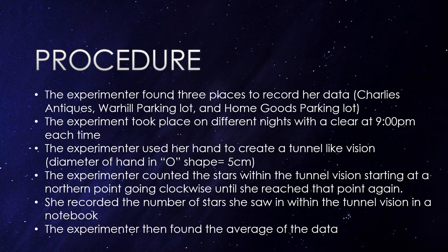The procedure. The experimenter found three places to record her data: Charlie's Antiques, Warhill parking lot, and Home Goods parking lot. The experiment took place on different nights with a clear sky at 9 p.m. each time. The experimenter used her hand to create a tunnel-like vision, and the diameter of her hand in the O shape is 5 centimeters. She counted the stars within the tunnel vision starting at a northern point, going clockwise until she reached that point again, and recorded the number of stars in a notebook. The experimenter then found the average of the data.